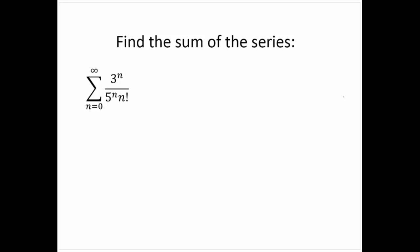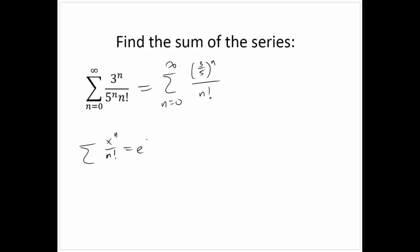Find the sum of Σ(n=0 to ∞) 3ⁿ / (5ⁿ · n!). We can write this as Σ(n=0 to ∞) (3/5)ⁿ / n!, which matches the Maclaurin series for eˣ with x = 3/5. So the sum equals e^(3/5).